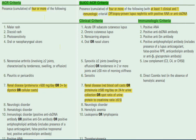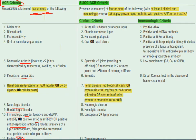For the ACR criteria, to diagnose lupus I need four or more of the following: malar rash, discoid rash, photosensitivity, oral or nasopharyngeal ulcers, arthritis, serositis in the form of pleuritis or pericarditis, renal disease, neurological manifestations, hematological disorders, or immunological disorders in the form of positive anti-double-stranded DNA, anti-Sm, antiphospholipid antibodies including lupus anticoagulant and anticardiolipin, and positive antinuclear antibody (ANA). These are the 11 criteria.